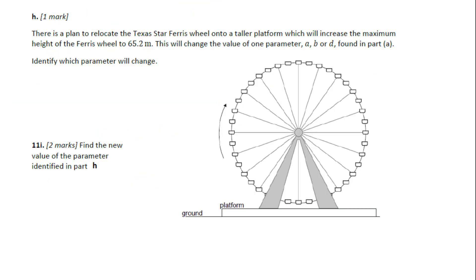There is a plan to relocate the Texas Star ferris wheel onto a taller platform, which will increase the maximum height of the ferris wheel to 65.2 meters. This will change the value of one parameter A, B, or D. A is amplitude, which is essentially the radius of the ferris wheel — A won't change. B is related to the period — the period won't change. D is the distance from the midline to the ground. Since the platform is increased, D will increase.